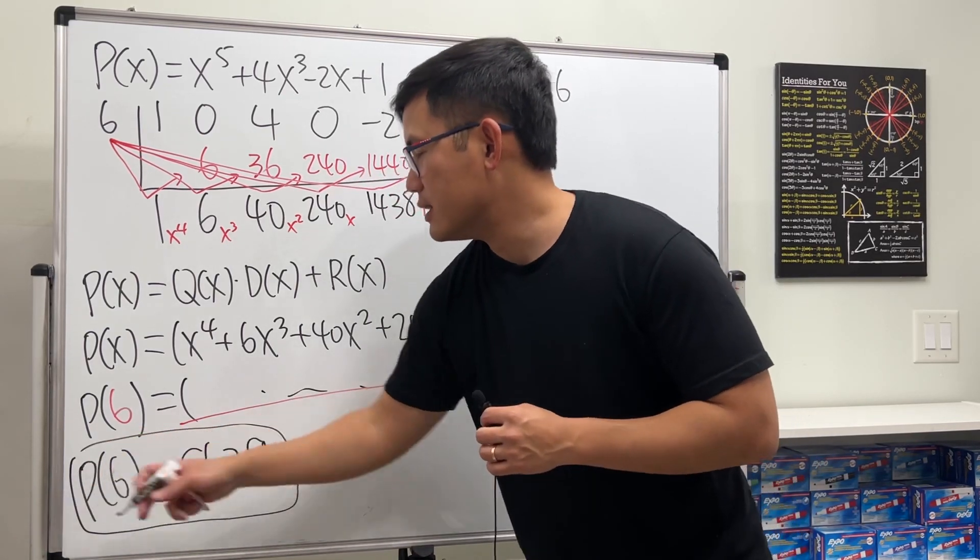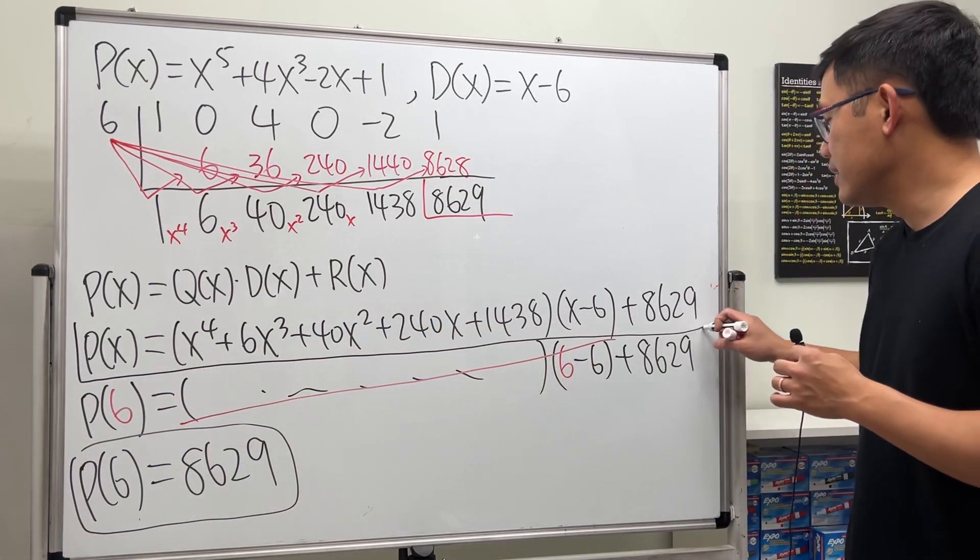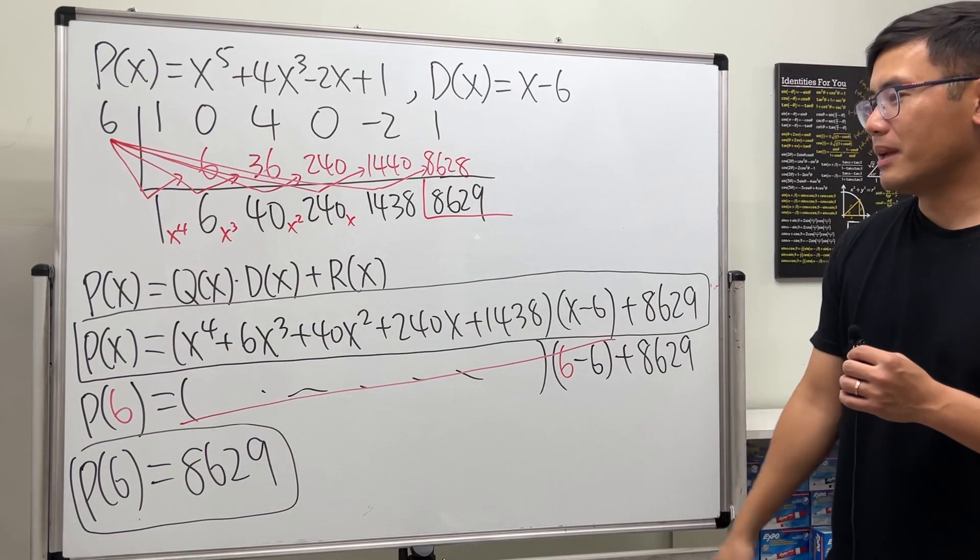So this is one little thing that we can do after we have P(x) expressed in this quotient times divisor plus the remainder form.